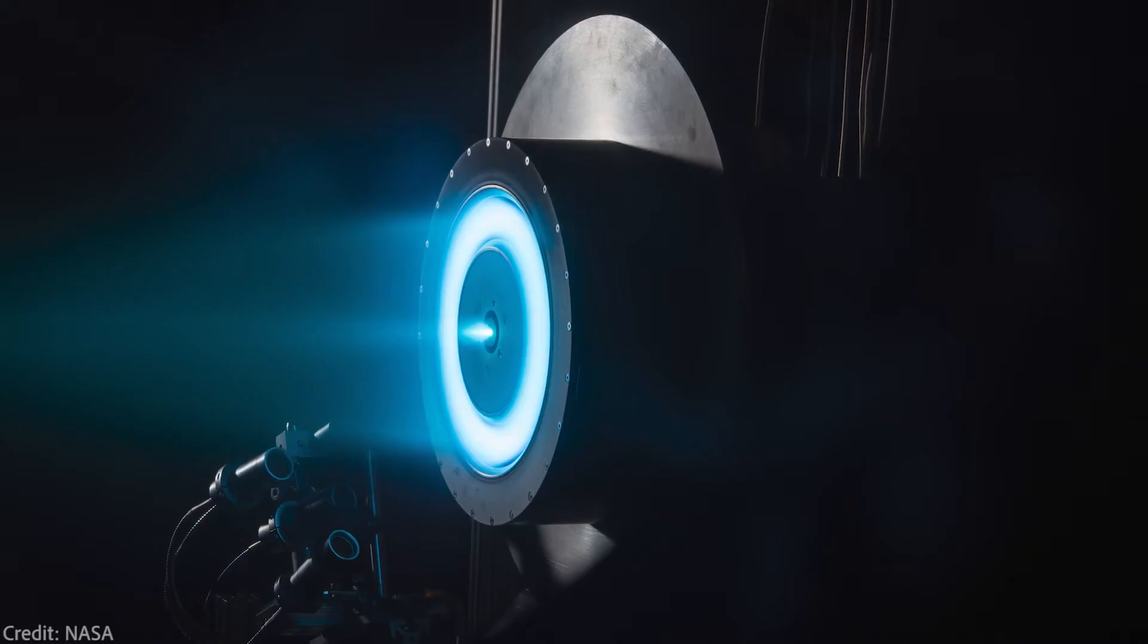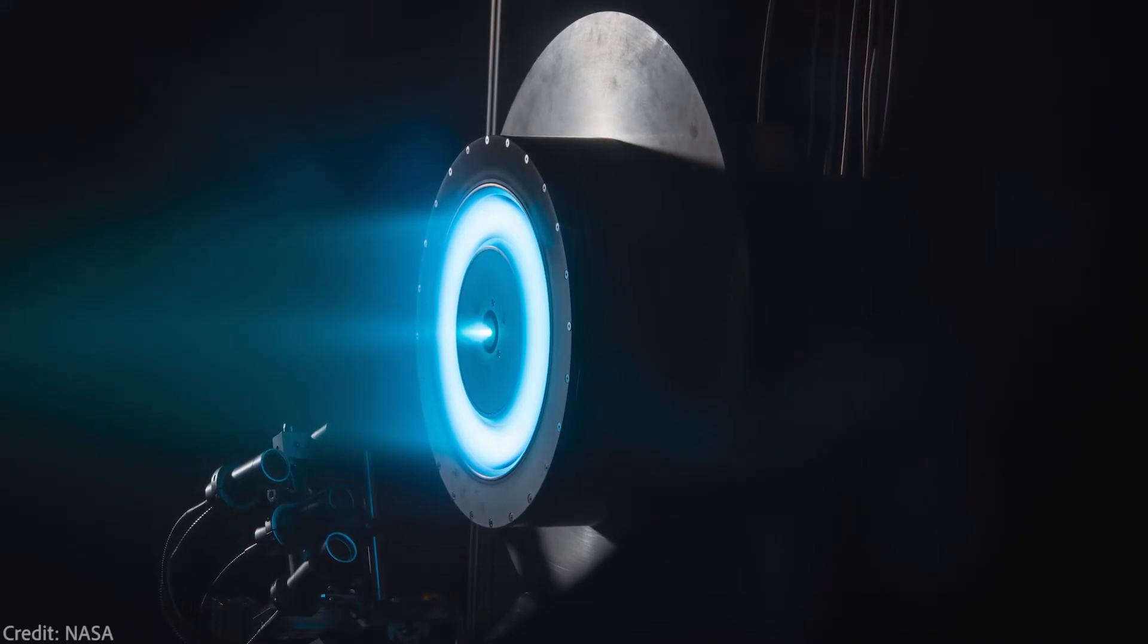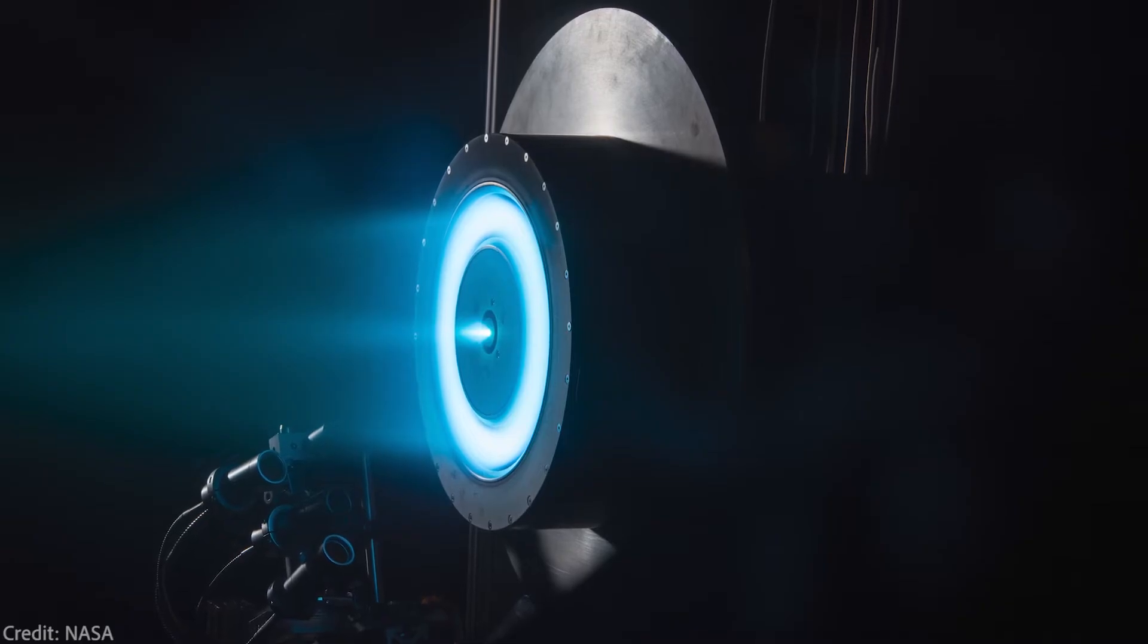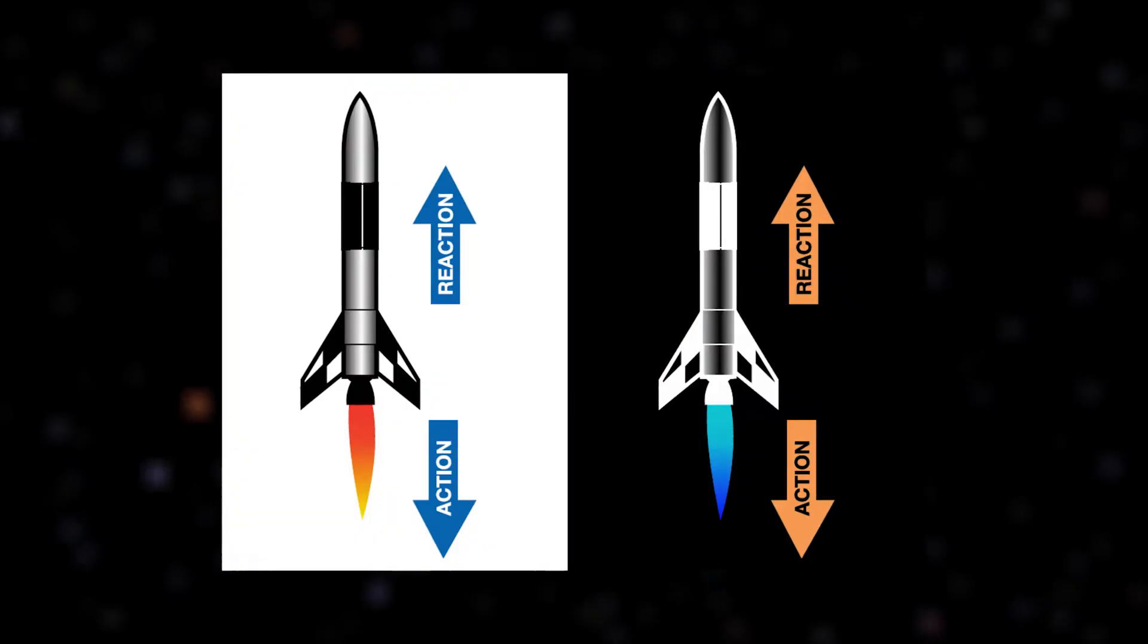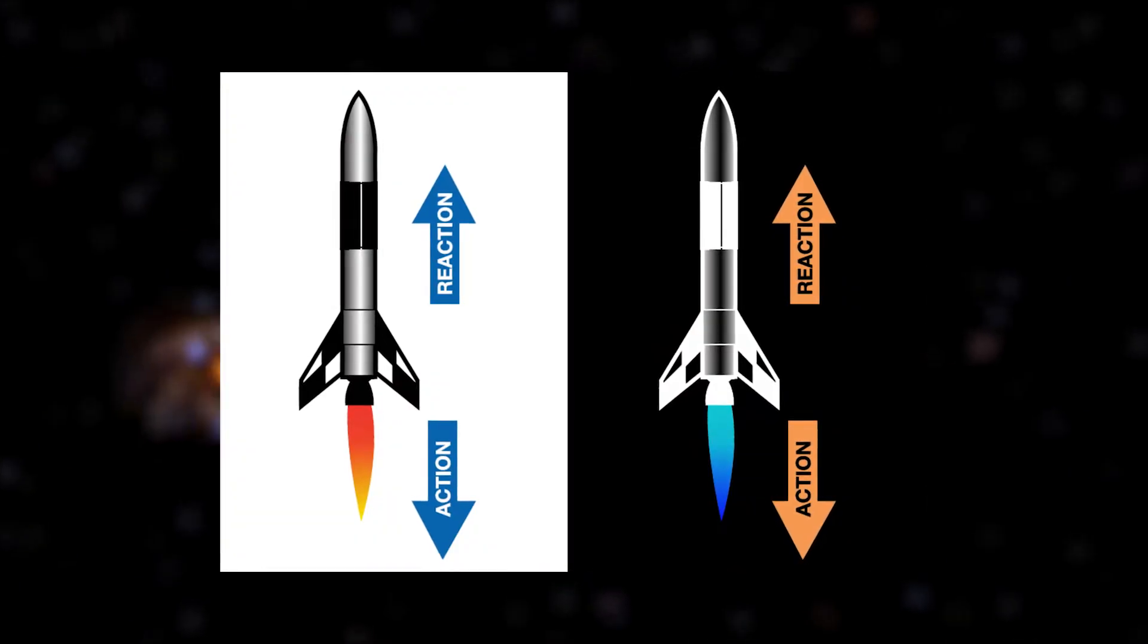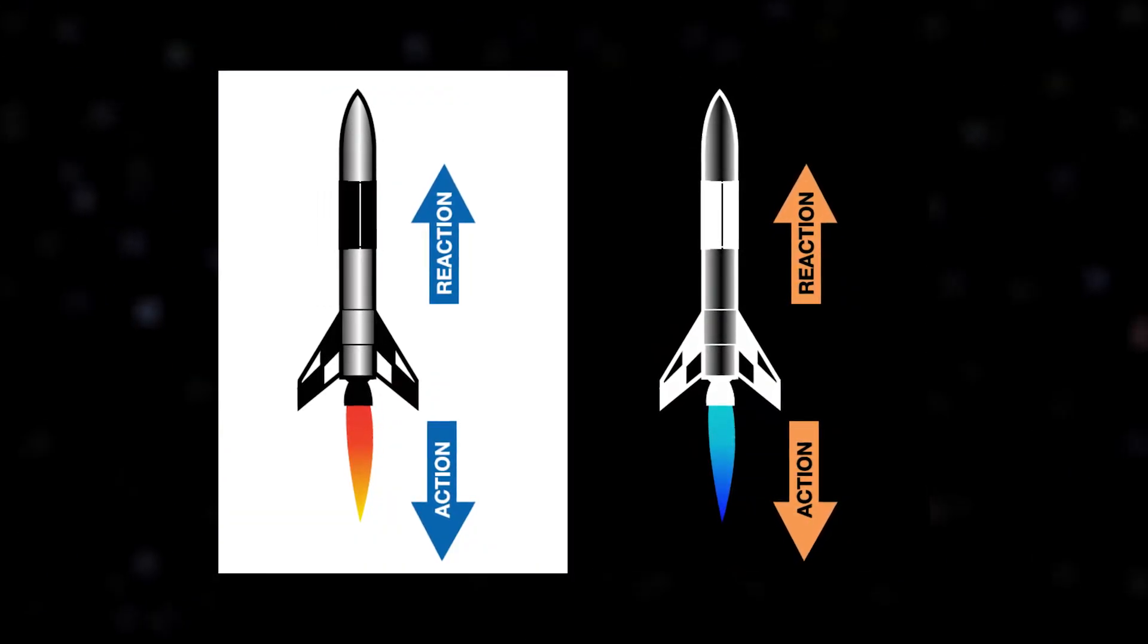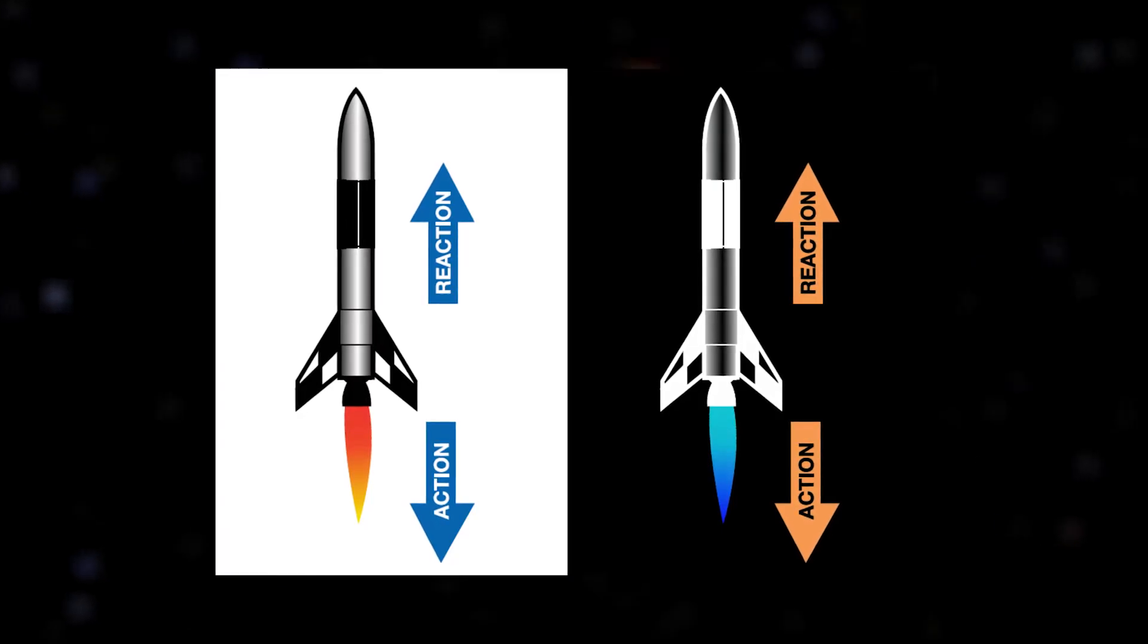But the specific impulse of electric thrusters, which is a parameter that basically describes how efficiently a rocket engine creates thrust, it is higher. In the simplest example, we can imagine two spacecraft. One with a chemical engine and the other with an electric one. And they both have the same small amount of fuel. Let's say a chemical rocket would use all of the fuel up in 10 seconds and accelerate by 4 km per second.